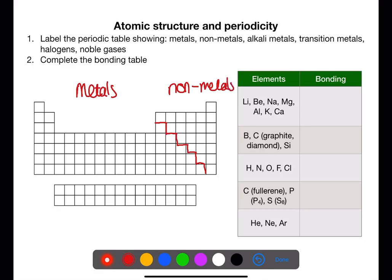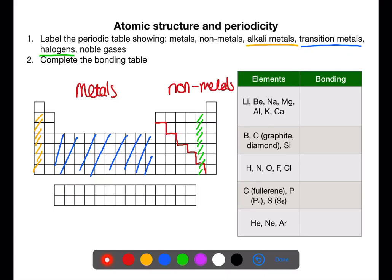There are then certain groups that you're expected to be familiar with. The first of those is the alkaline metals which is group one. The transition metals are the section in the center which you'll get to learn about in advanced higher. The halogens are group seven and then finally the noble gases are group eight.